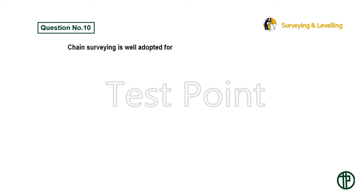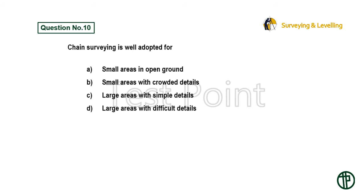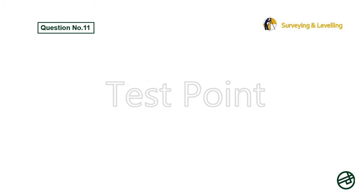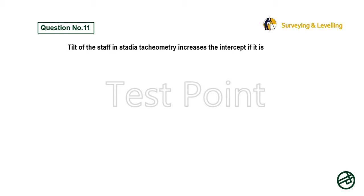Question 10: Chain surveying is well adopted for — Option A: Small areas in open ground. Option B: Small areas with crowded details. Option C: Large areas with simple details. Option D: Large areas with difficult details. Answer is Option A: Small areas in open ground.